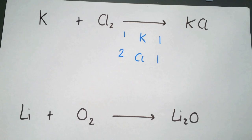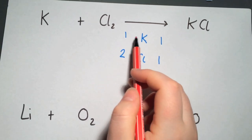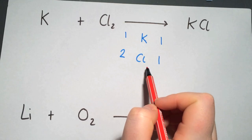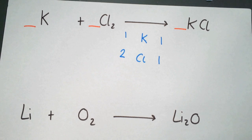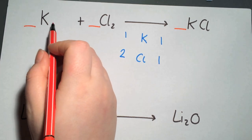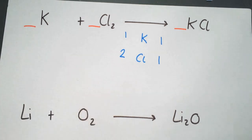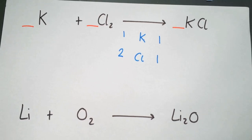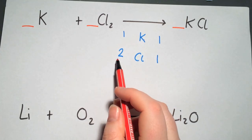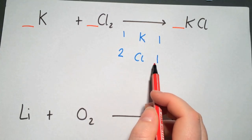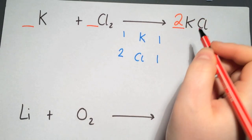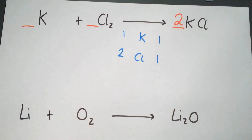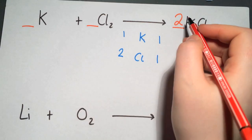You then start looking at the elements to see where the imbalance is. The potassium is already balanced whereas the chlorine is not. When you want to balance an equation you can only put numbers in front of the chemical formulae — you cannot make any changes to the chemical formulae, you can't add in extra elements or take any away. You can only put in what we call coefficients. We have two chlorines on the left hand side and only one on the right hand side, so to get two chlorines on the right hand side we need to put a large two in front, as this will multiply that part by two.